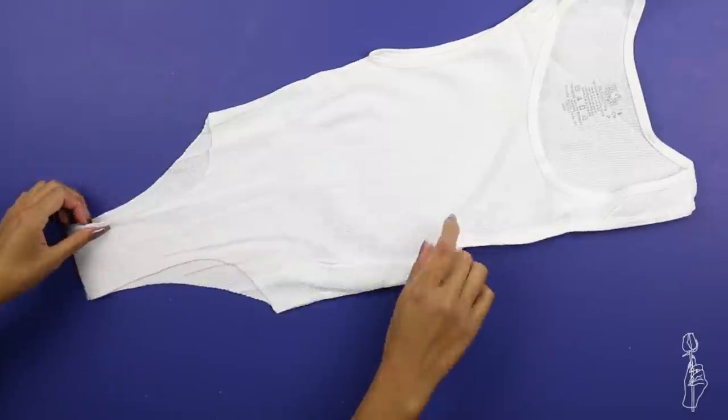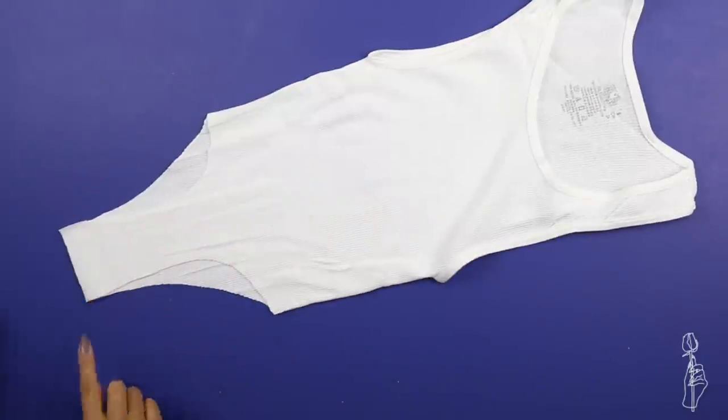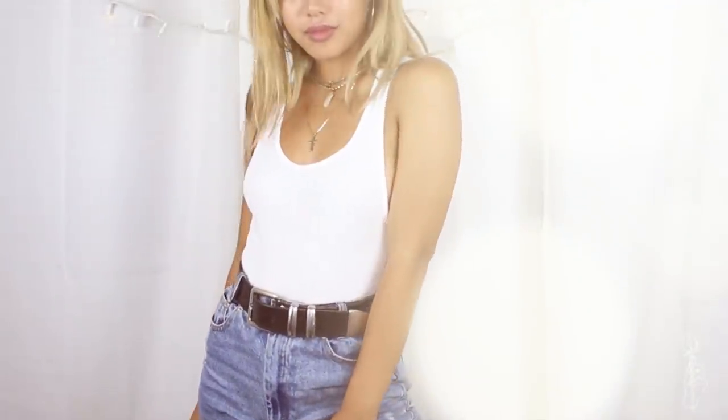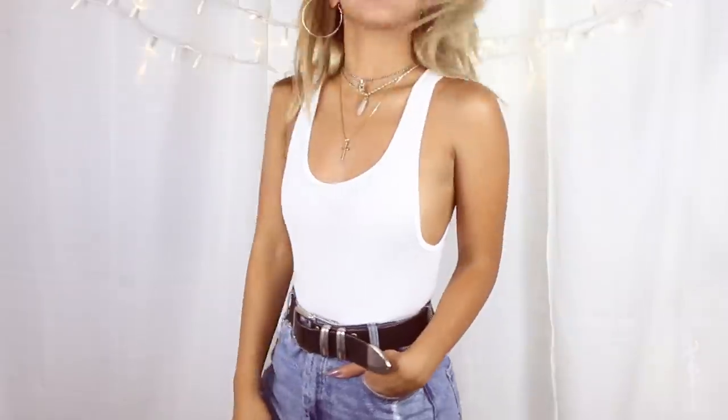After that, you can turn your bodysuit inside out and sew a straight seam down for the crotch. Honestly, that is pretty much it. It was so simple and easy. I like this because it's fitted and basic staple, but it's still really stylish.